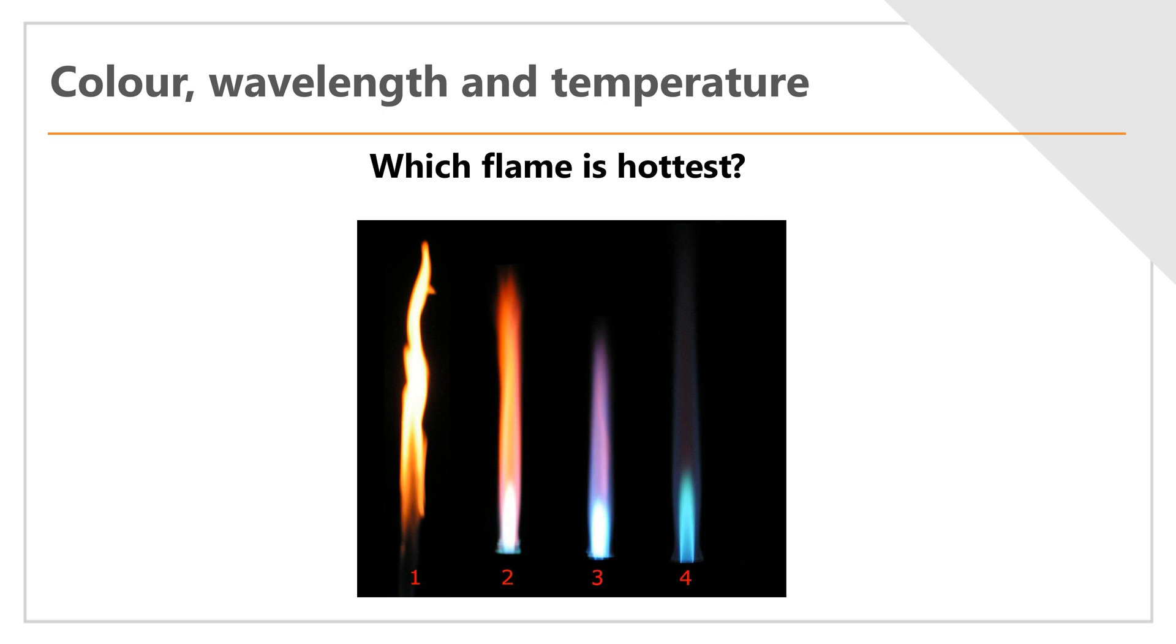If you think back to using a Bunsen burner in the chemistry lab, there are different flames that you can use for different purposes. You start off with the hole closed and with the safety flame, this yellowish one, and then as you open up the hole and allow more air to be drawn in, you get more complete combustion.